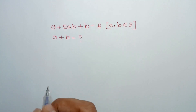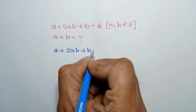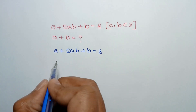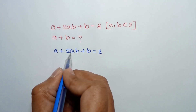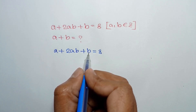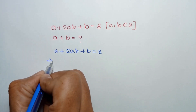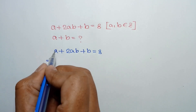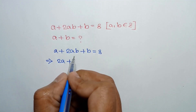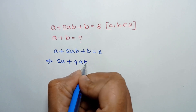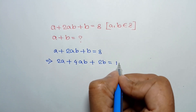We have given a plus twice ab plus b is equal to 8. If we take common a from the first two terms, it will remain 1 plus twice b, but there is only b. So to make twice b, we have to multiply both sides by 2. Multiplying both sides by 2, we can write 2a plus 4ab plus 2b is equal to 16.